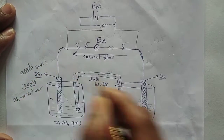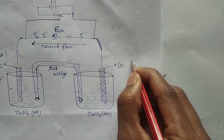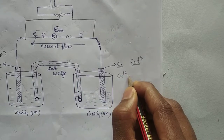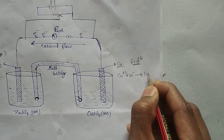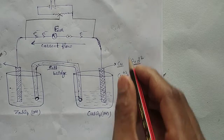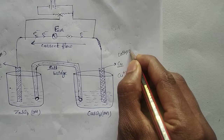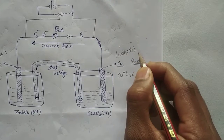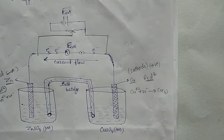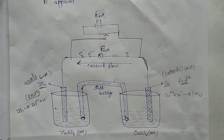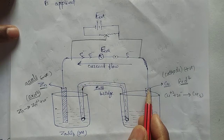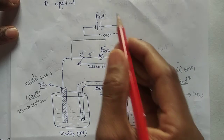The anode is the negative terminal. Similarly, copper has a tendency to undergo reduction. The half-cell reaction is: Cu²⁺ + 2e⁻ → Cu, and copper gets deposited. The half-cell in which reduction takes place is called the cathode, which is the positive terminal. As a result of this oxidation and reduction, electrons flow from the zinc electrode to the copper electrode.